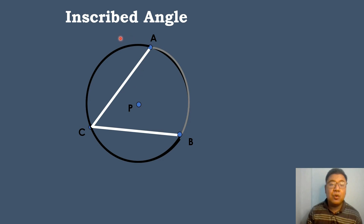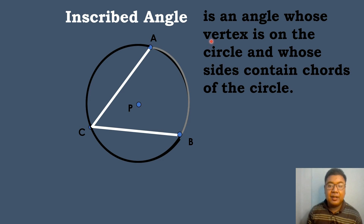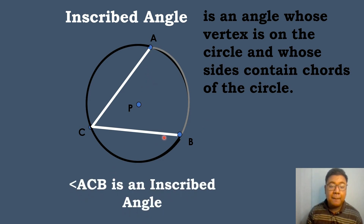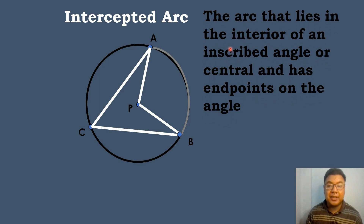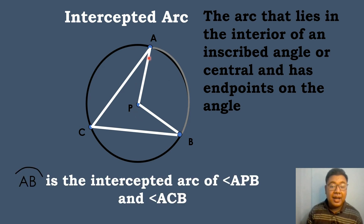The next type of angle is the inscribed angle. An inscribed angle is an angle whose vertex is on the circle and whose sides contain chords of the circle. In this case, the inscribed angle is angle ACD, because the vertex is on the circle and it contains two chords: chord AC and chord BC. The intercepted arc is an arc that lies in the interior of an inscribed angle or central angle and has endpoints on the angle. The intercepted arc of central angle APB and inscribed angle ACB is arc AB.